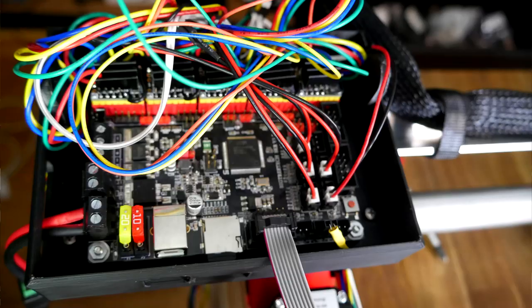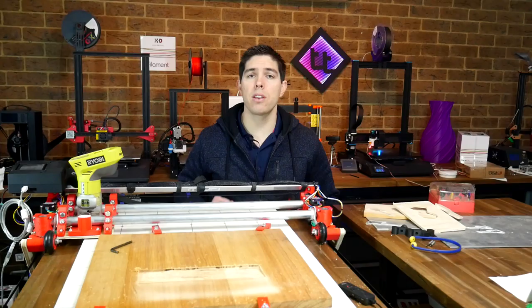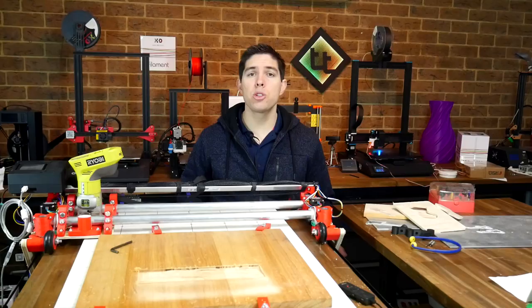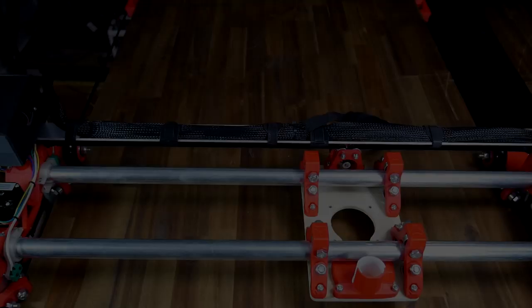Previously I printed the parts and put it all together and configured some custom firmware. In this episode I set up the router and a spoil board and finally cut some stuff. As usual, I'm going to cover everything step by step.